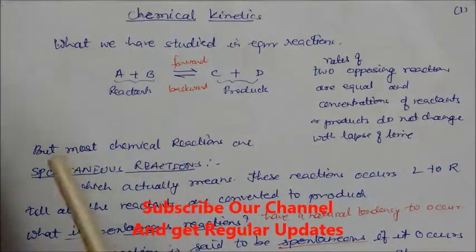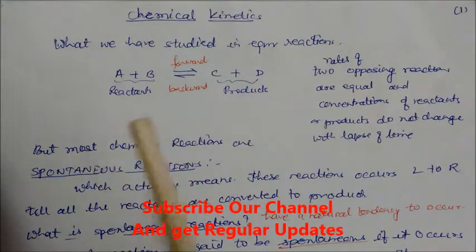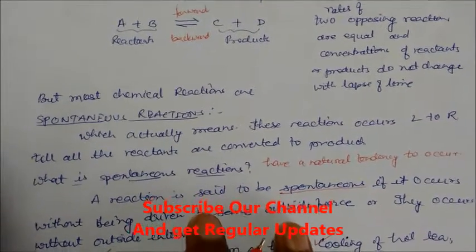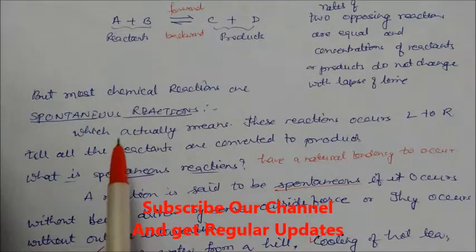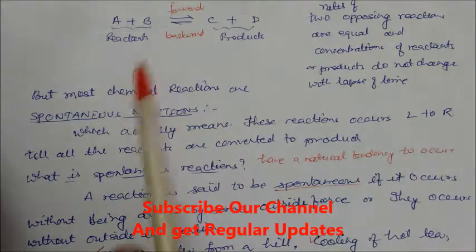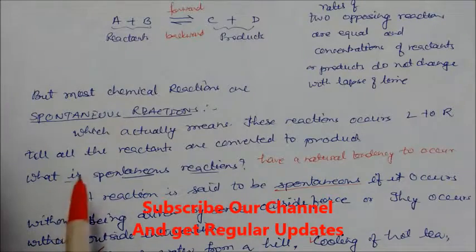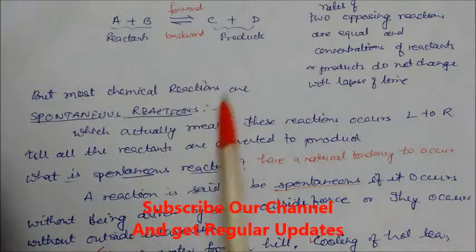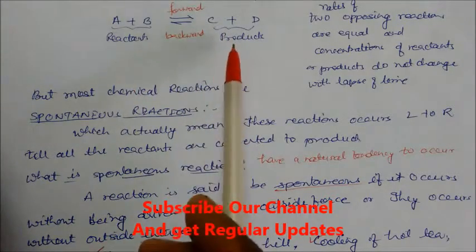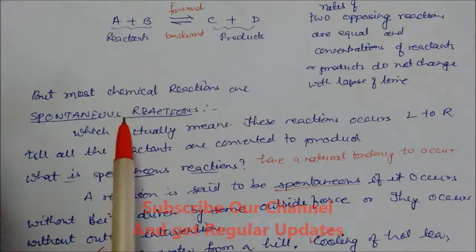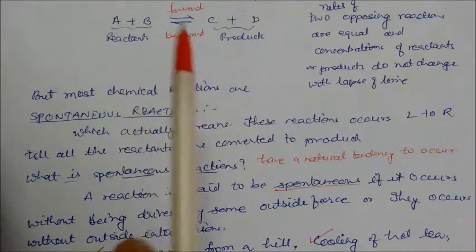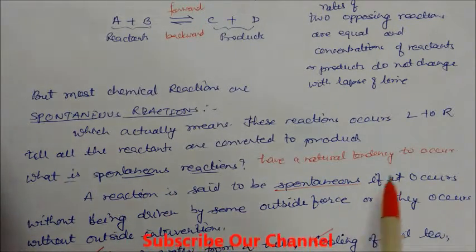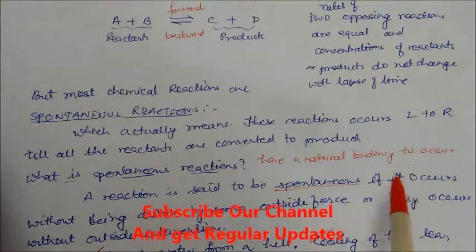Most chemical reactions are spontaneous reactions. Spontaneous reactions occur from left to right, meaning reactants are converted into products. All reactants are completely converted to products, so there is no reactant remaining. In a spontaneous reaction, the reaction does not go backward — it always goes in one direction. Secondly, spontaneous reactions have a natural tendency to occur, so they will occur naturally without being forced.